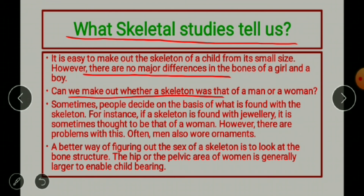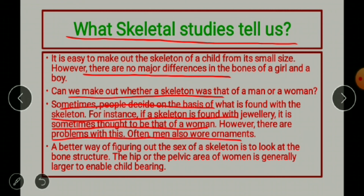Sometimes people decide based on what is found with the skeleton. For instance, if a skeleton is found with jewelry, it is sometimes thought to be that of a woman. However, there are problems with this, as men also wore ornaments.